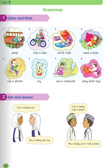Number 2 is ask and answer. Discuss with your friend. For example, can a baby cry? Yes, a baby can cry. Can a baby ride a bike? No, a baby can't ride a bike. And so on.